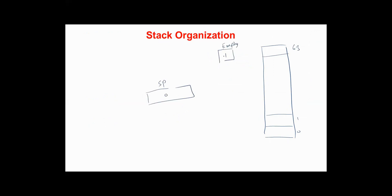Initially the stack pointer is set to zero, the EMPTY flag to one, and the FULL flag to zero — this means that now we can push items into the stack but we cannot pop items from the stack. To push an item into the stack, the stack pointer is incremented by one and the contents of the data register is transferred to the register or location addressed by the stack pointer.